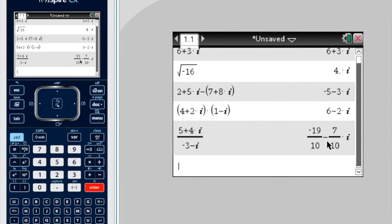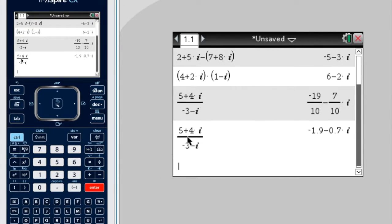Now the default is to make it in fractions. If you want it in decimal form, just press control, enter, and it gives you the same answer but in decimal form.